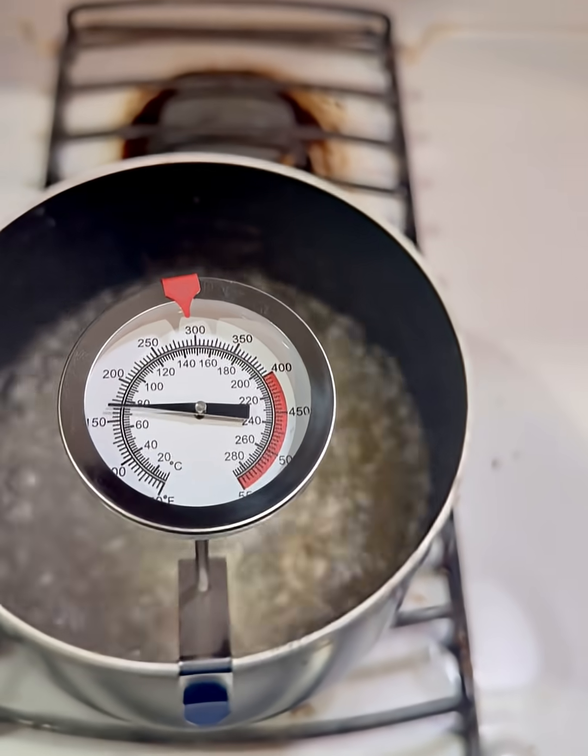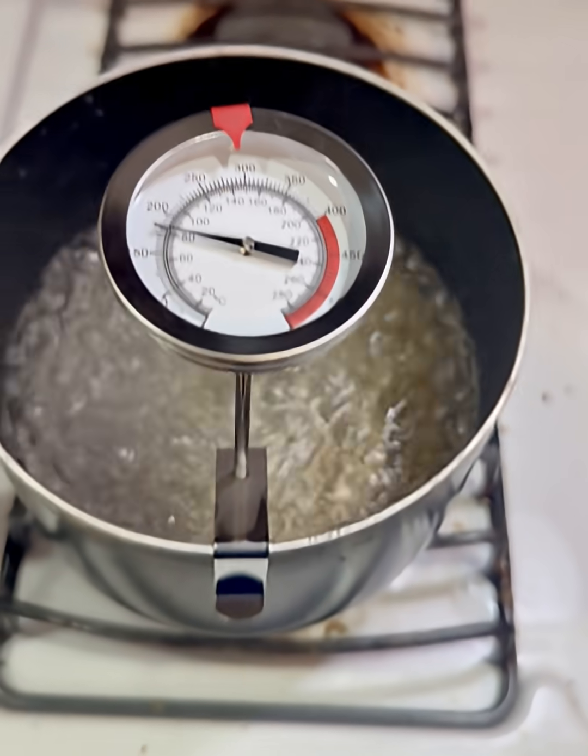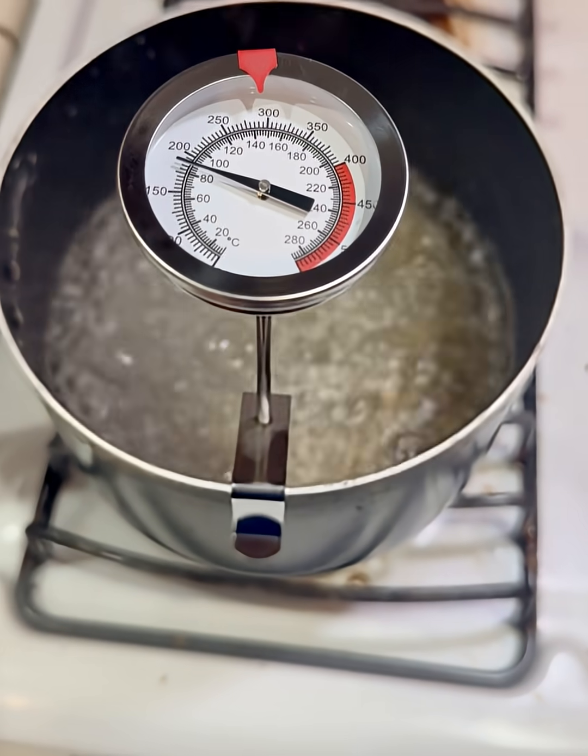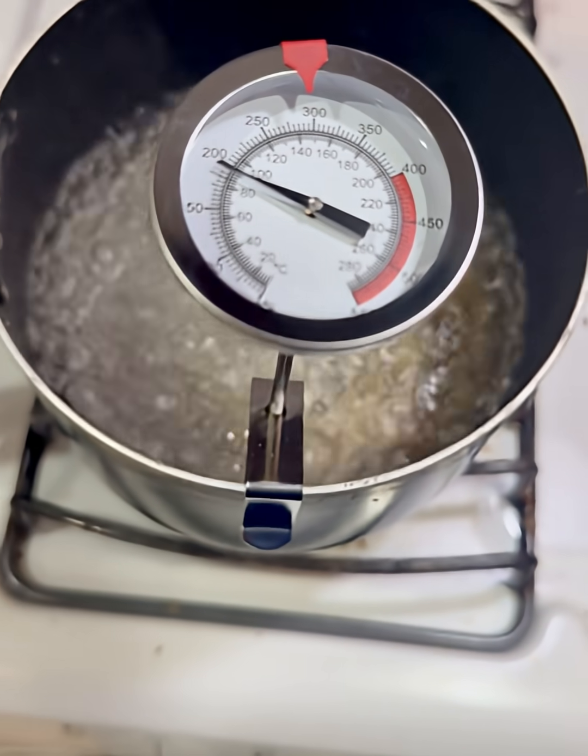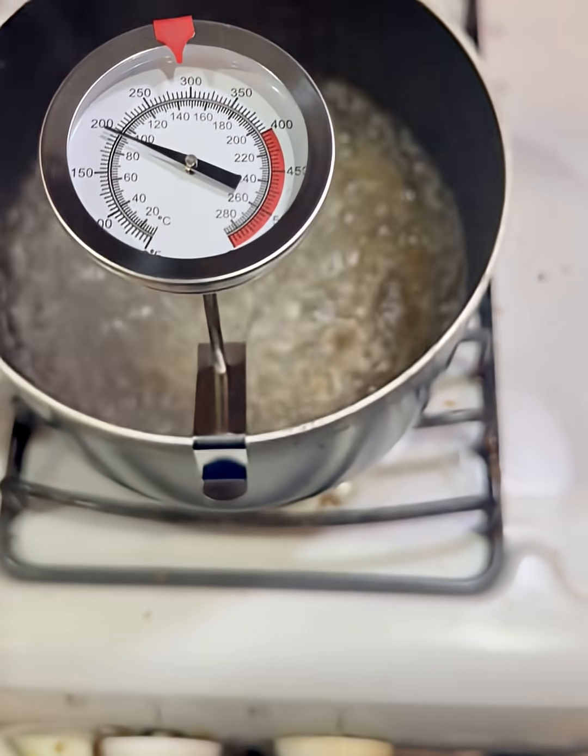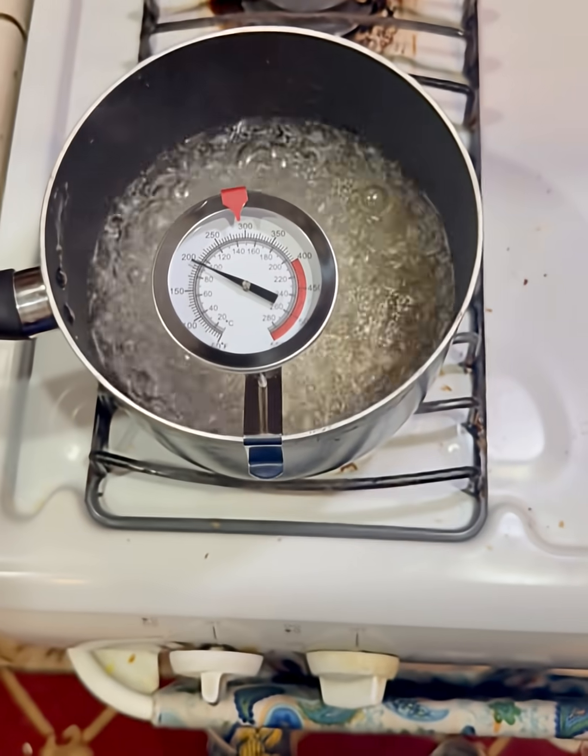Start by filling a deep pot with water and bringing it to a rolling boil. Clip the thermometer onto the pot using the clip and make sure the probe isn't touching the sides or the bottom. Wait a few seconds for the needle to settle.